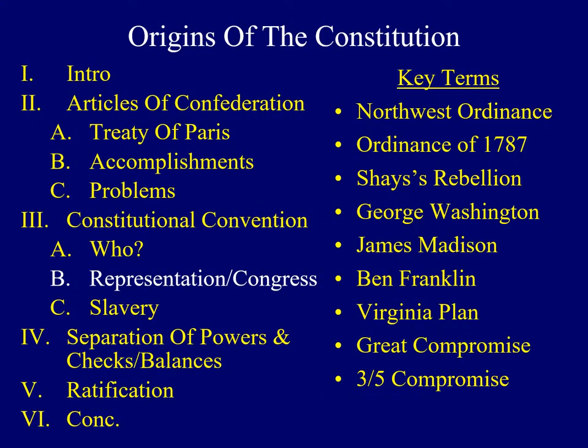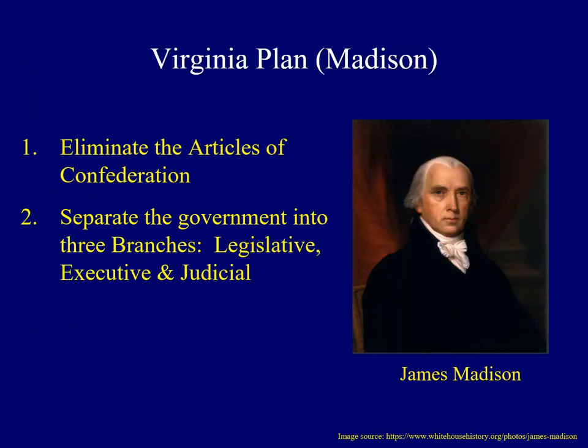One approach for studying the provisions of the Constitution focuses on a series of controversies resolved through compromise at the Constitutional Convention. The first such controversy dealt with representation for each state in Congress. It was caused by James Madison as he developed the Virginia Plan. His plan called for the complete elimination of the Articles of Confederation — a radical proposal, as the delegates were only supposed to modify the Articles. However, after some initial discussion, delegates agreed that they needed to start from scratch.